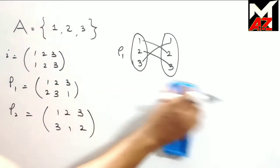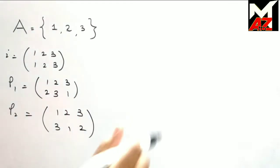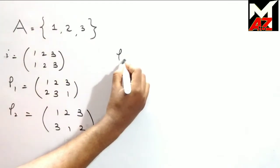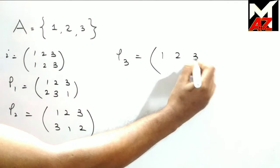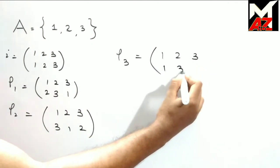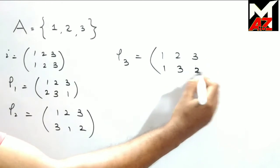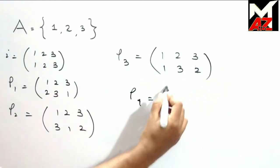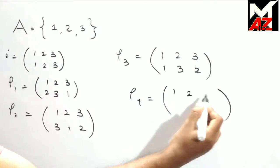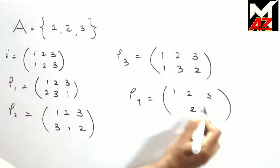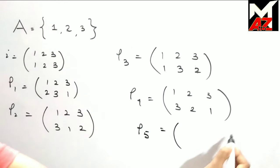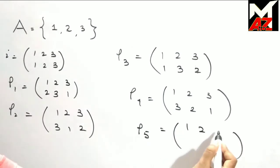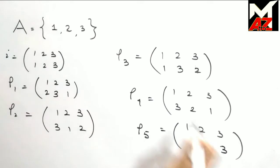The other bijective mappings are ρ3, where 1 is fixed, 2 goes to 3, and 3 goes to 2. ρ4: 2 is fixed, 1 goes to 3, and 3 goes to 1. And ρ5: 3 is fixed, 1 goes to 2, and 2 goes to 1.